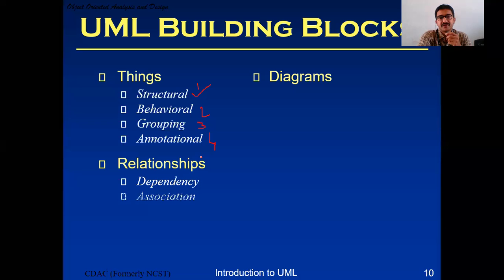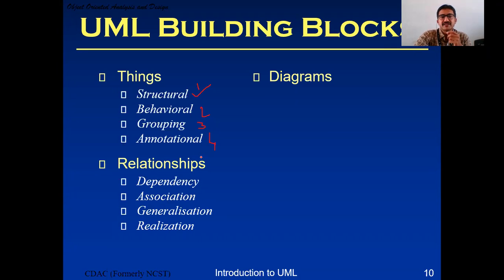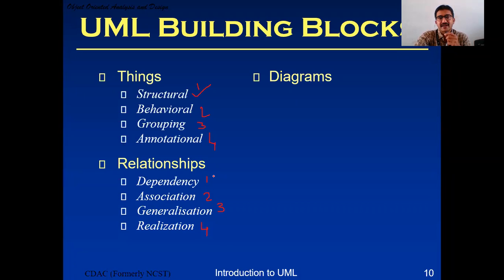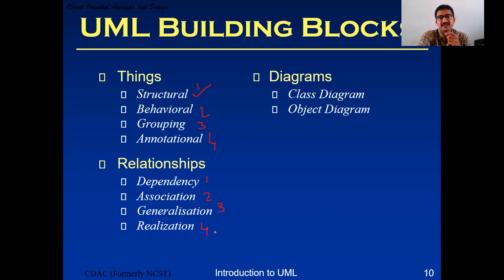Coming to the relationships, we have four types: dependency, association, generalization, and realization.